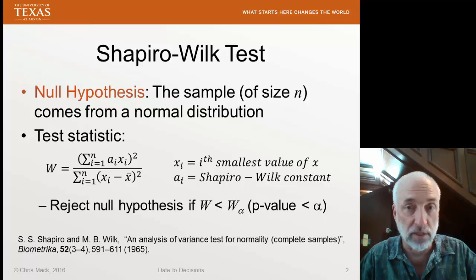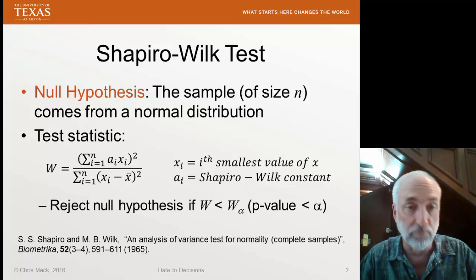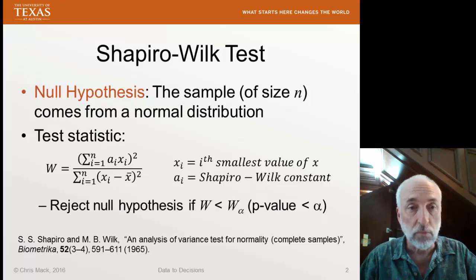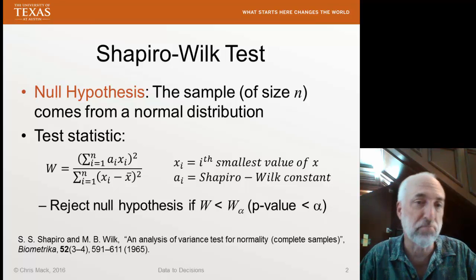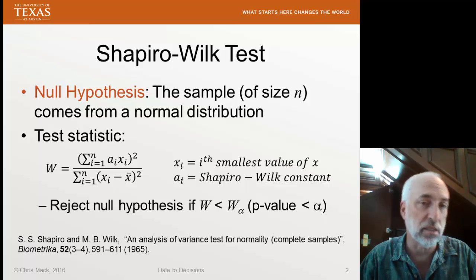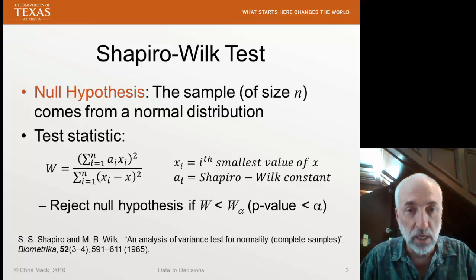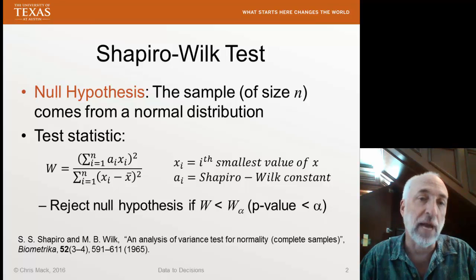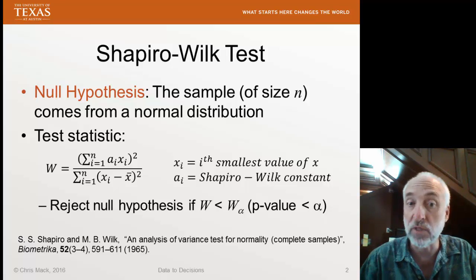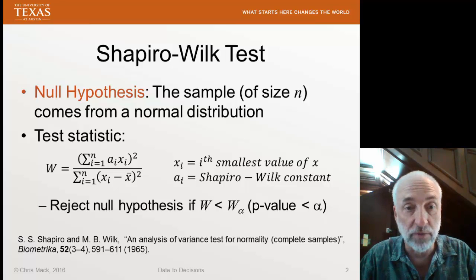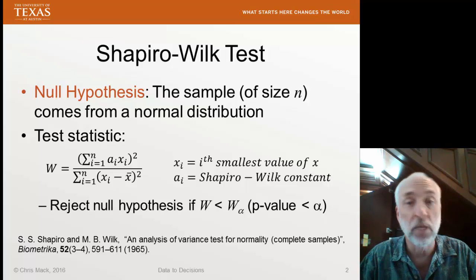It uses a null hypothesis that the sample comes from a normal distribution. It calculates this test statistic called W. The denominator in this is simply the sum of the squares — the sum of the squared differences of the data from its mean.